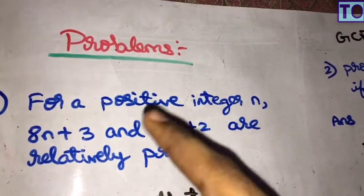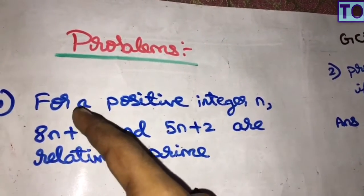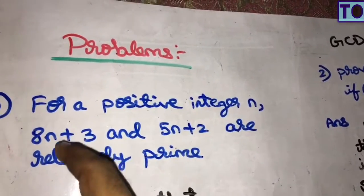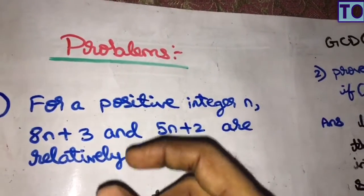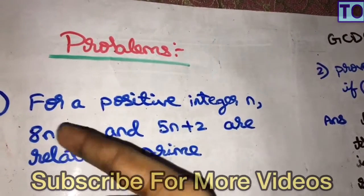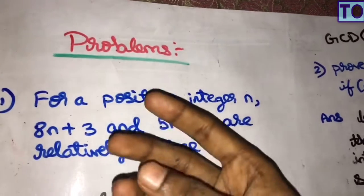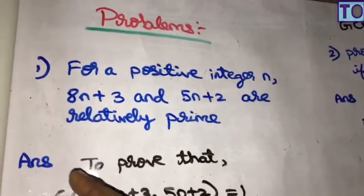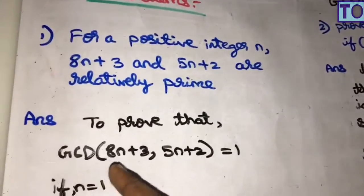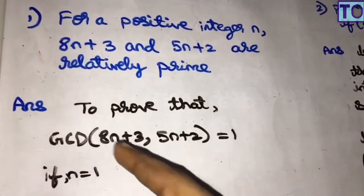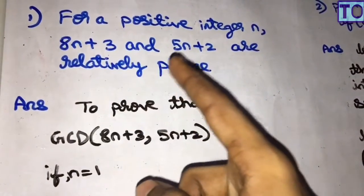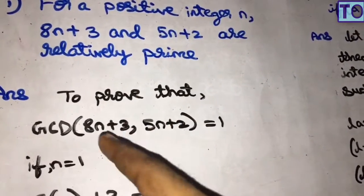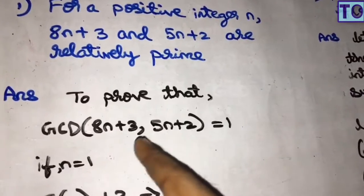So we write a and b. For positive integer n, relatively prime means gcd(a, b) equals 1. We say a and b are relatively prime. Now we will tell you how to approach this — that's the trick. We want to show gcd(8n+3, 5n+2) equals 1.